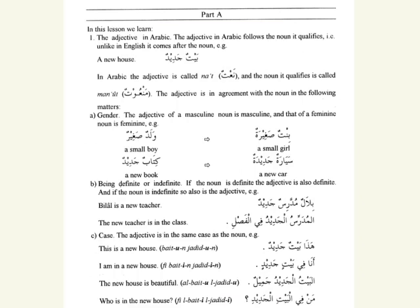we learn about the adjective in the Arabic language. The adjective in Arabic follows the noun that it qualifies. Unlike in English, it comes after the noun. For example, if we want to say 'a new house,' we say Beytun Jedidun.